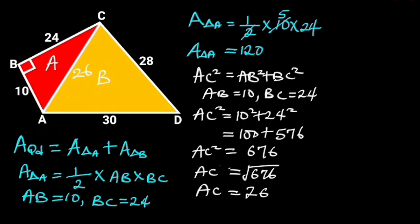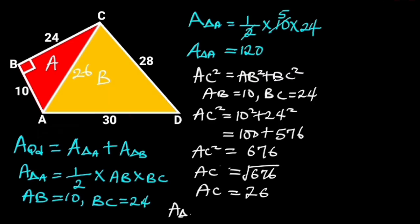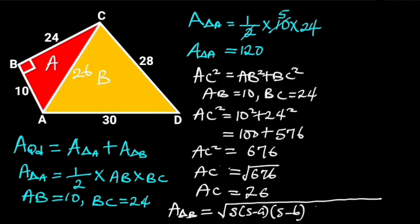Now we know the value of AC, let's go ahead and find the area of triangle B. Since the 3 sides of the triangle are known, we are going to use Heron's formula. From Heron's formula, the area of triangle B is the square root of S times (S minus A) times (S minus B) times (S minus C), where S is A plus B plus C all divided by 2, and A, B, C are the sides of the triangle.